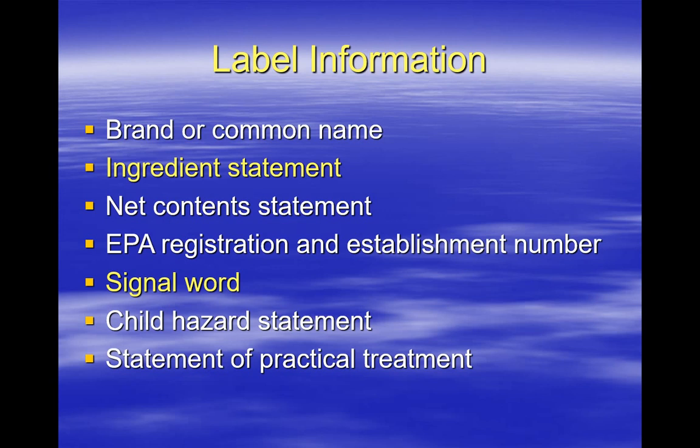There are at least 12 elements required by EPA. These include brand name, active ingredient statement, a net content statement, EPA registration number, EPA establishment number, signal word, child hazard statement, and statement of practical treatment. Although all these label provisions are important, cultivators need to make sure the active ingredient is on the approved pesticide list. By knowing the difference between the three signal words on a pesticide label, we can make choices based on product toxicity or hazard.